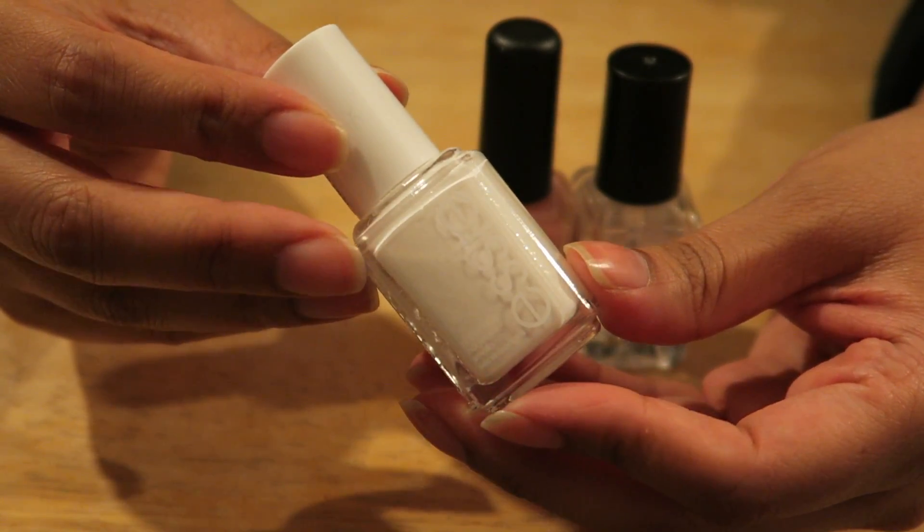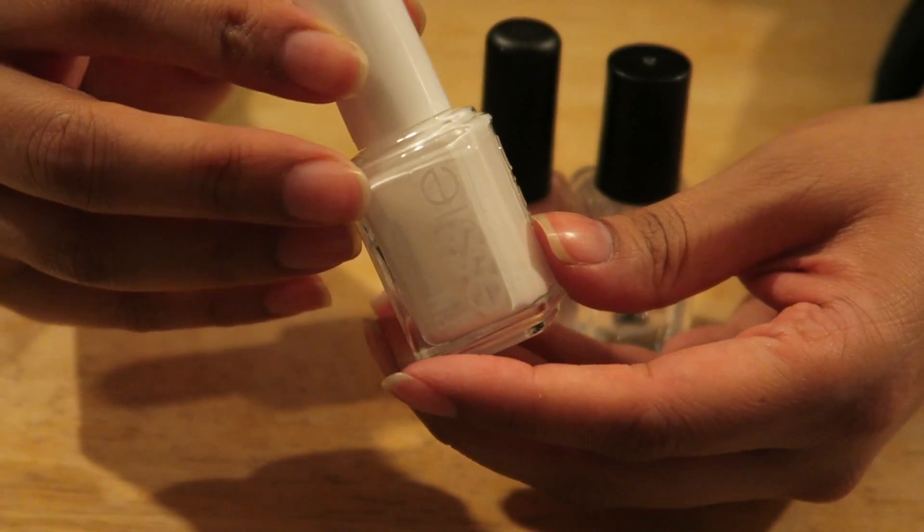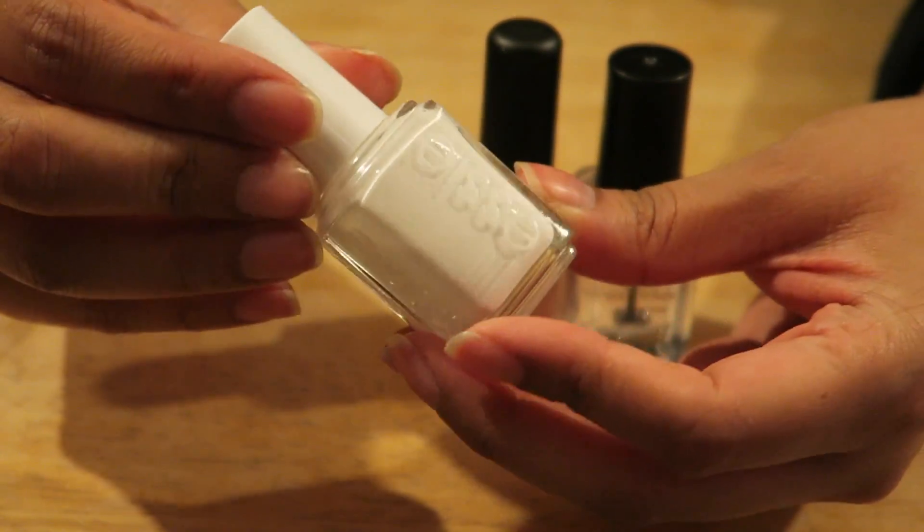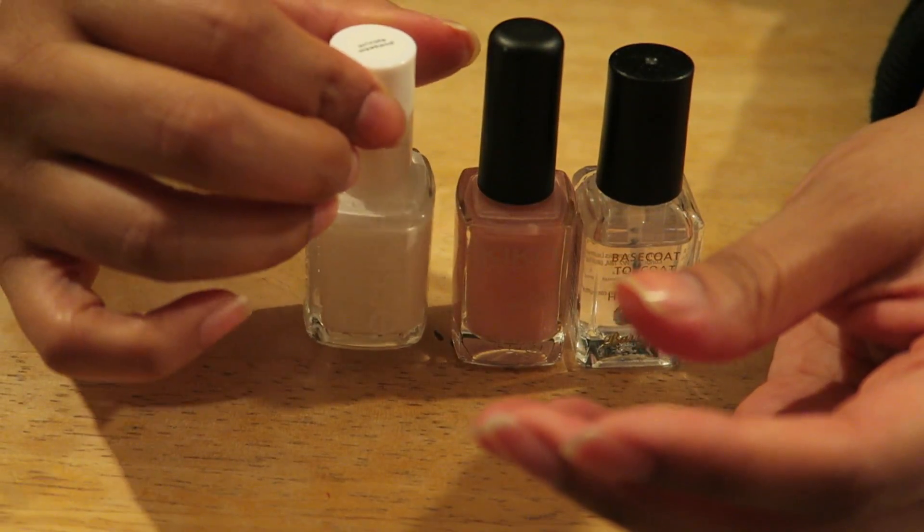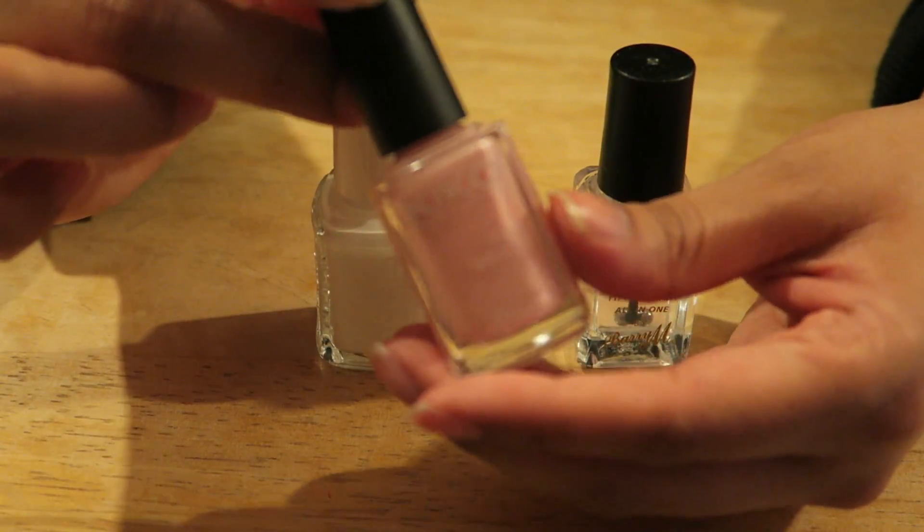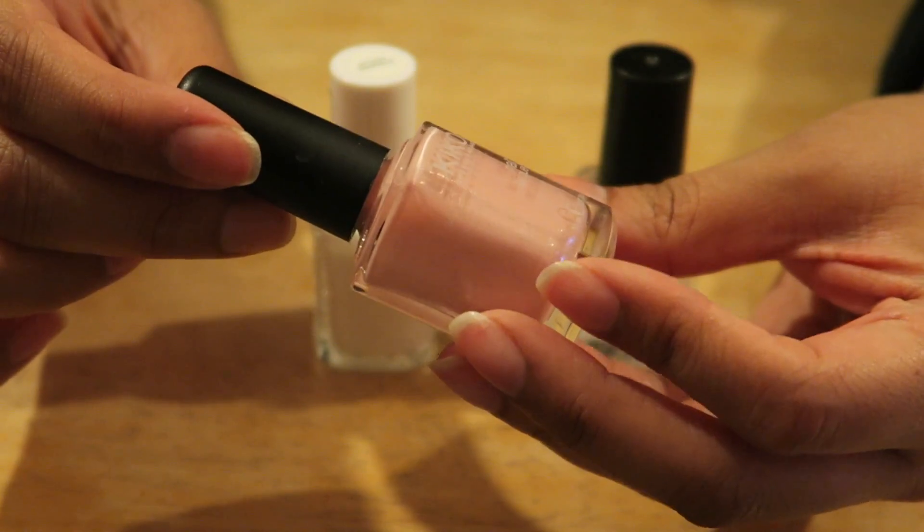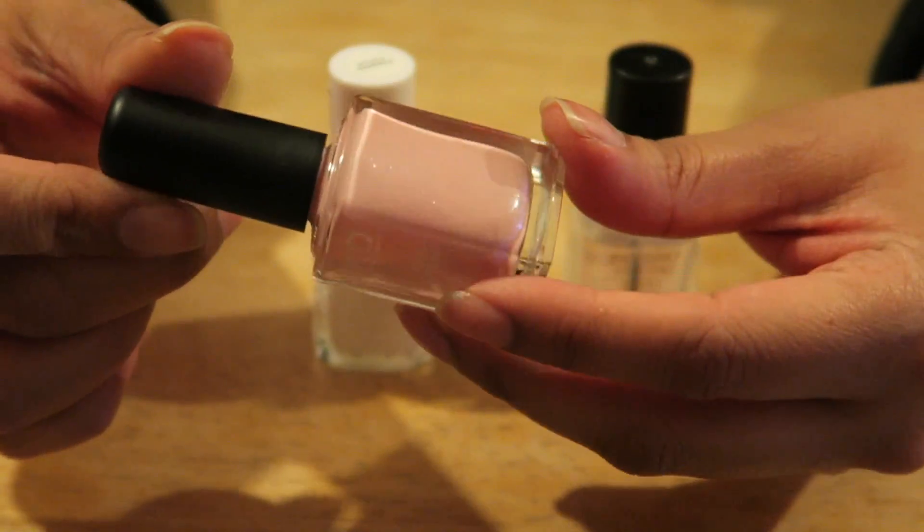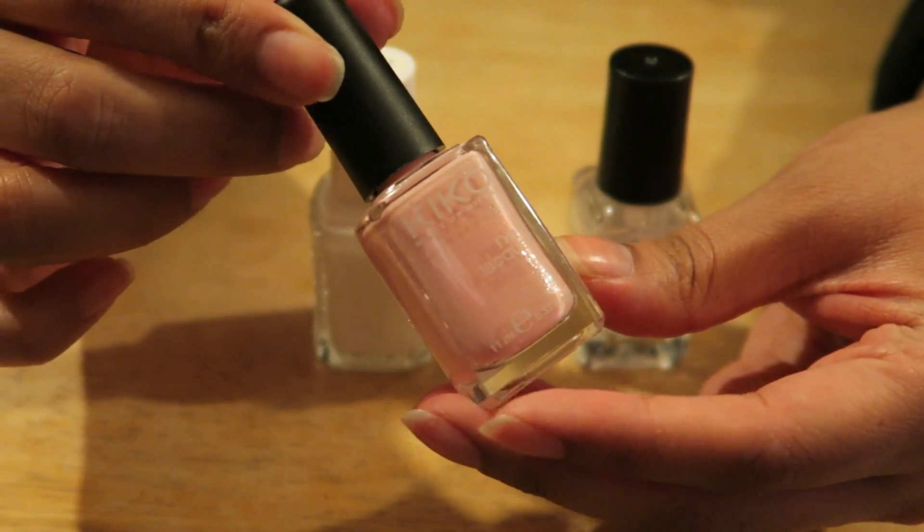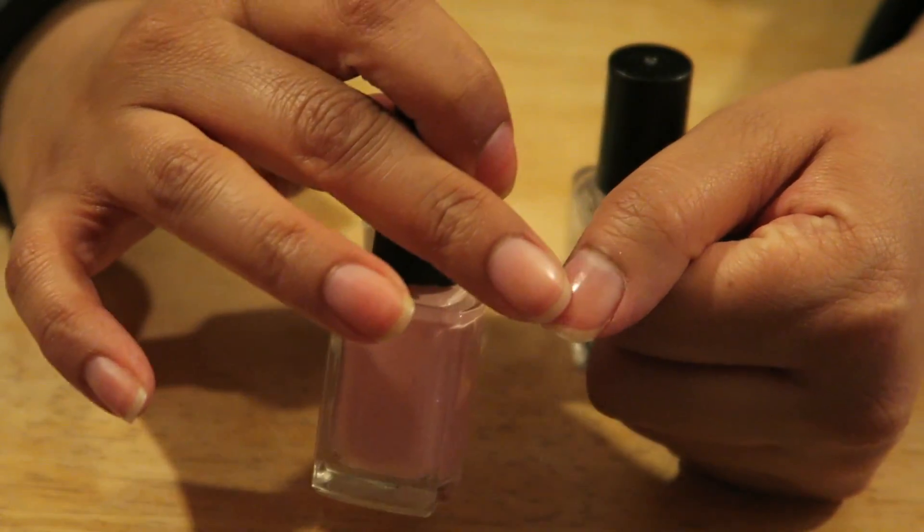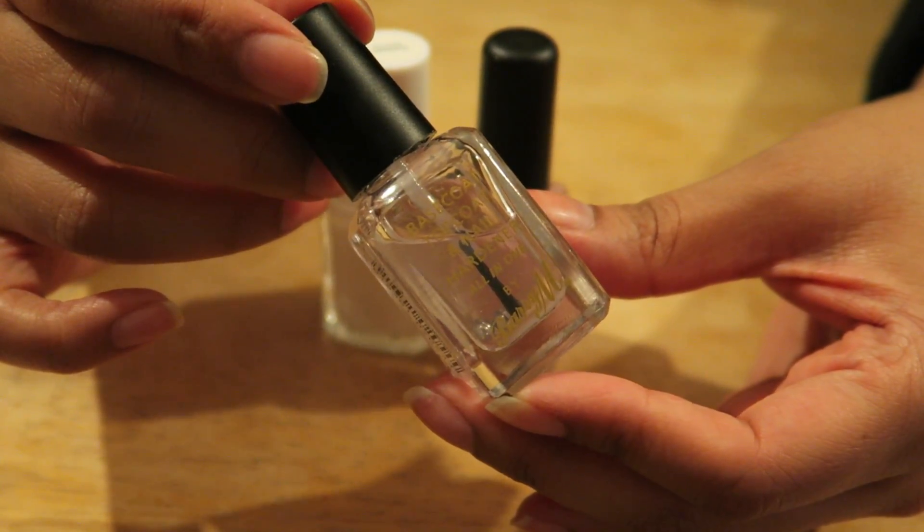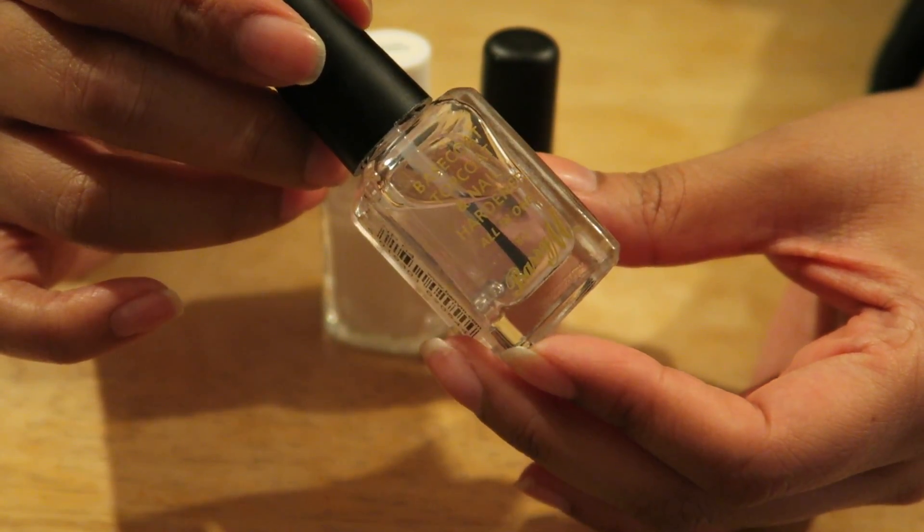So this is by Essie, it's called Private Weekend, and it's a white color with some kind of shimmer in it. The second color we're using here is Kiko, and this is a pink color with another shimmery color in it. I think this one is called 216. This will go on the bed of the nail here. And finally we have a Barrium top coat and base coat which will just go over the nail varnishes.